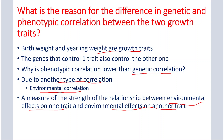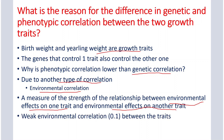Birth weight and yearling weight are measured at different age points, so there are different environmental factors which affect the performance or phenotype of these traits. Due to this reason, there is a very weak environmental correlation of about 0.1, which is negligible. We can say the difference between the genetic correlation and environmental correlation between birth weight and yearling weight was observed because different types of environmental factors affect these two traits.